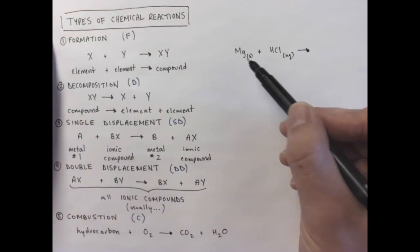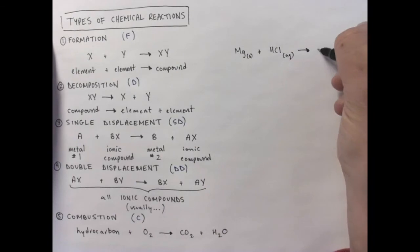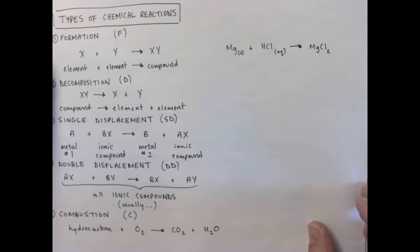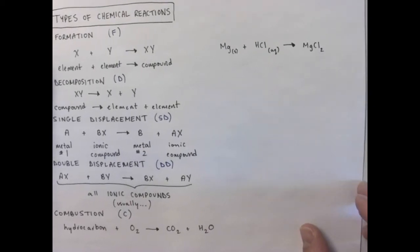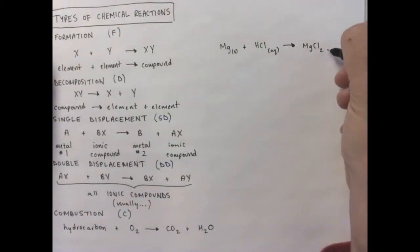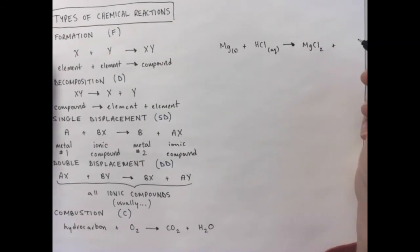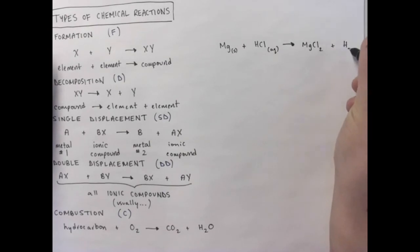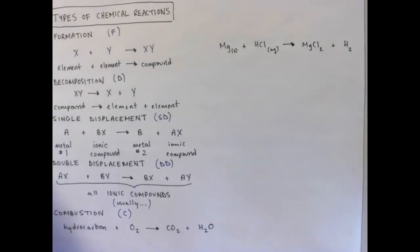So this looks like it's a single displacement reaction. And what's going to happen is the magnesium will kick out the hydrogen, and magnesium will hang out with chlorine. Remember the charges. Magnesium forms an ion with a 2 plus charge. So we write MgCl2. And we kick out hydrogen, but hydrogen is a diatomic molecule. So that means we have to write it as H2. And there you go. This is a single displacement reaction.